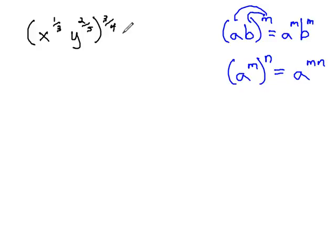Seeing a similar thing in this problem, we'll take that three-fourths and put it in onto each factor. As we do, we're going to have to multiply the double exponents together.